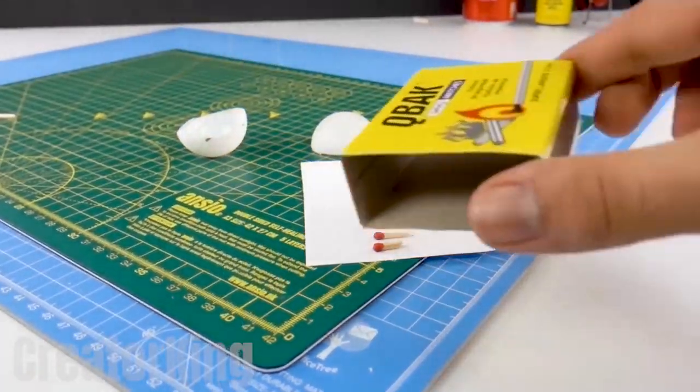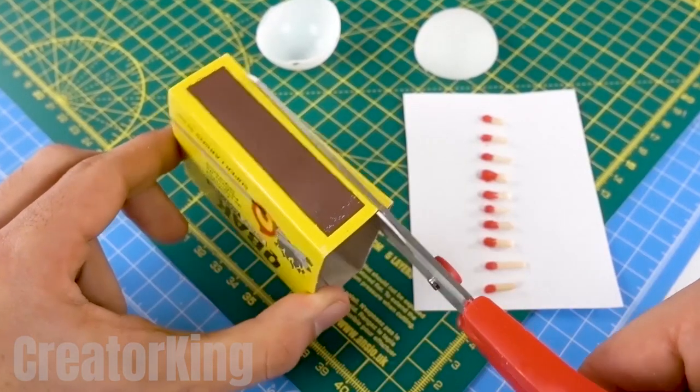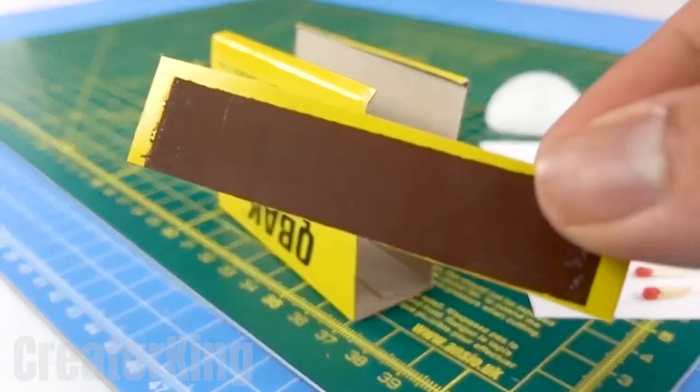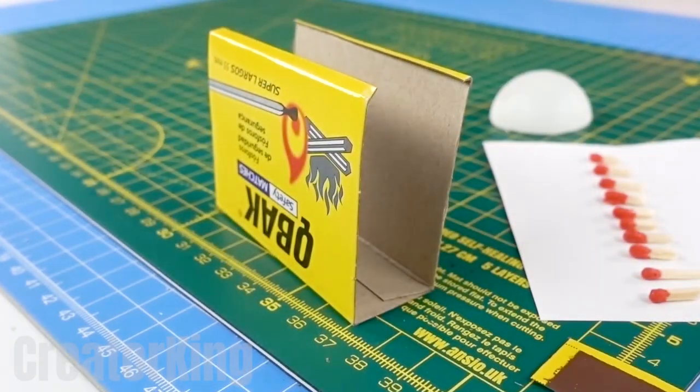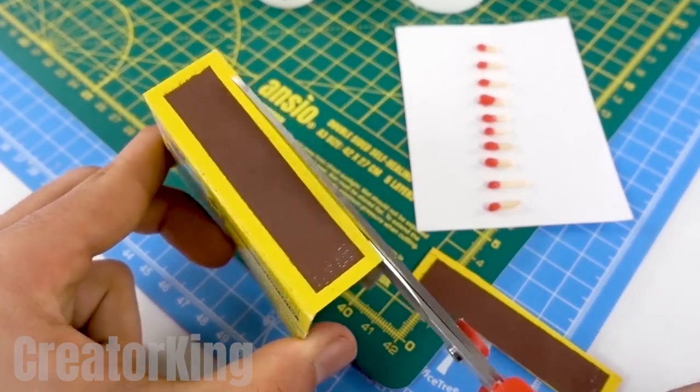Take the matchbox cover again. And with a pair of scissors, cut out the red strip on the side of the box. The truth is, I don't know what this part of the box is called, but I've never had the need to name it until now. If anyone knows what it's called, tell us in the comments.